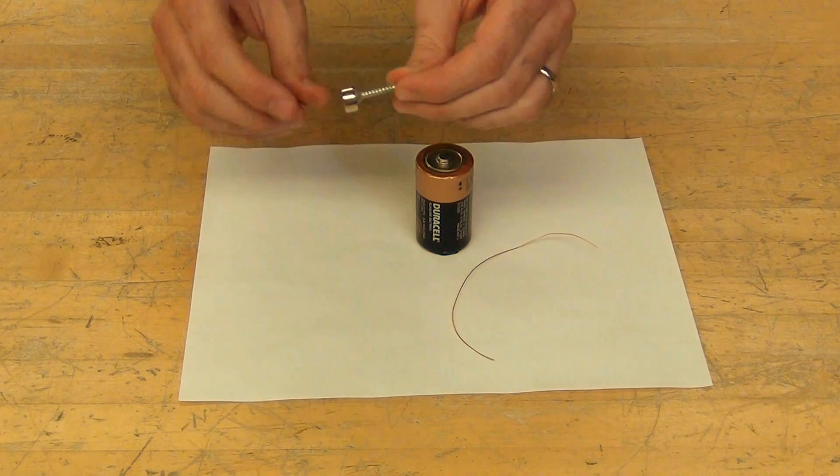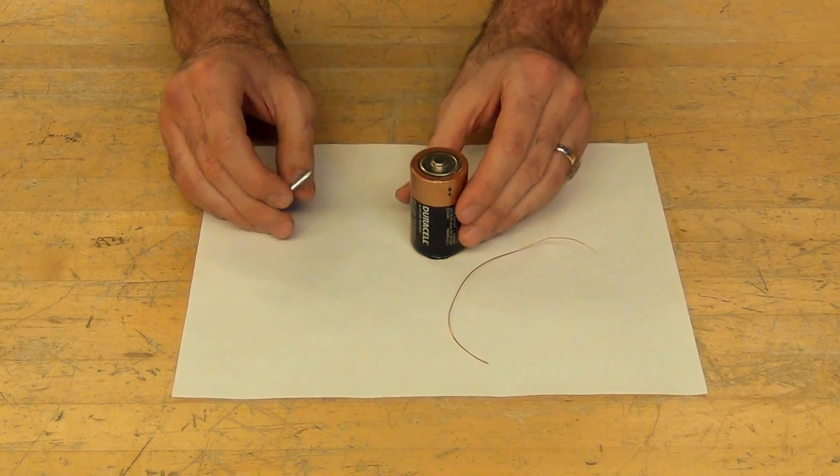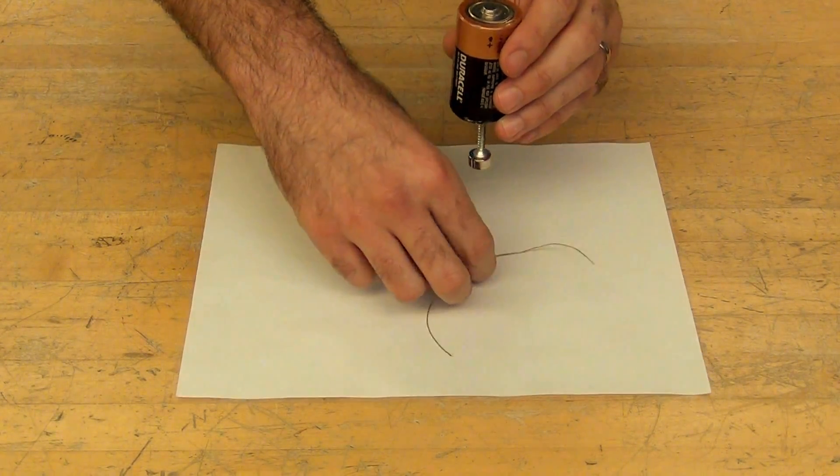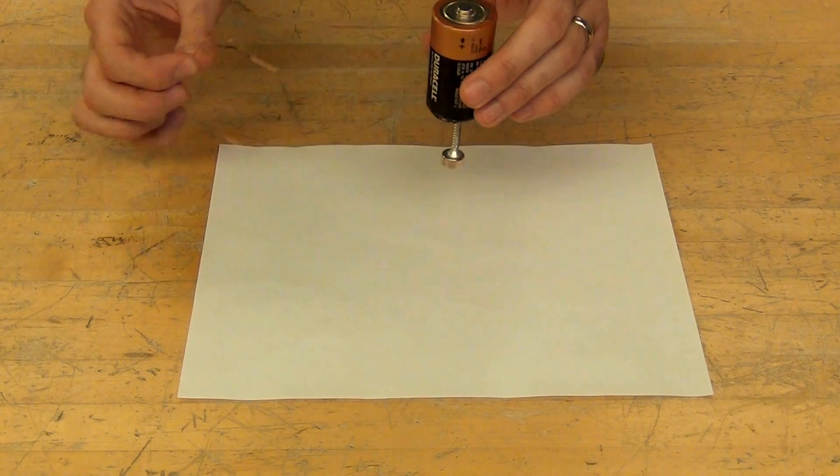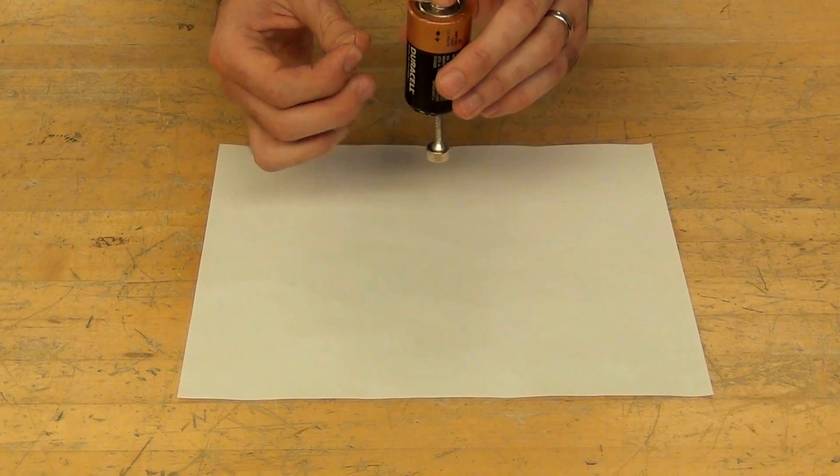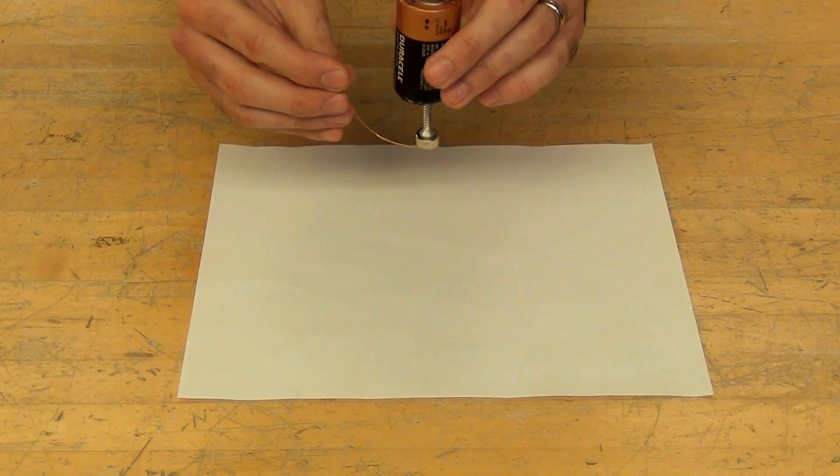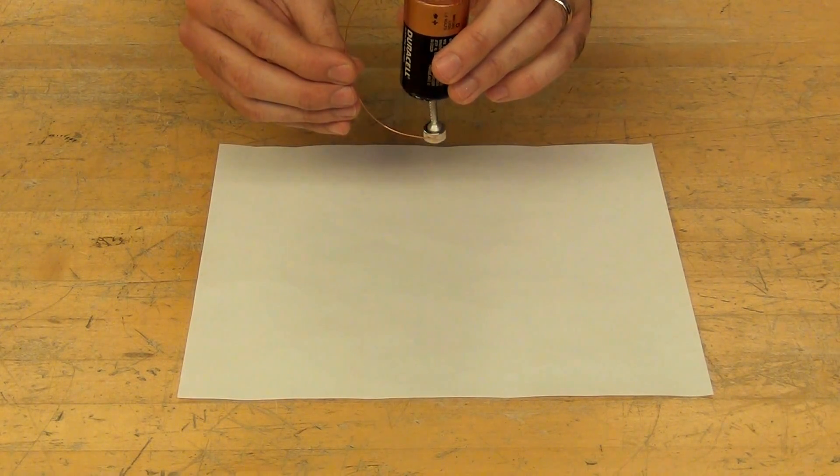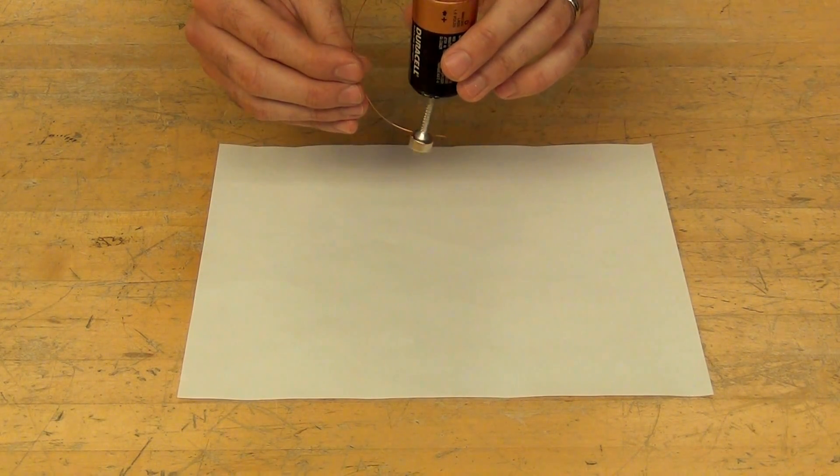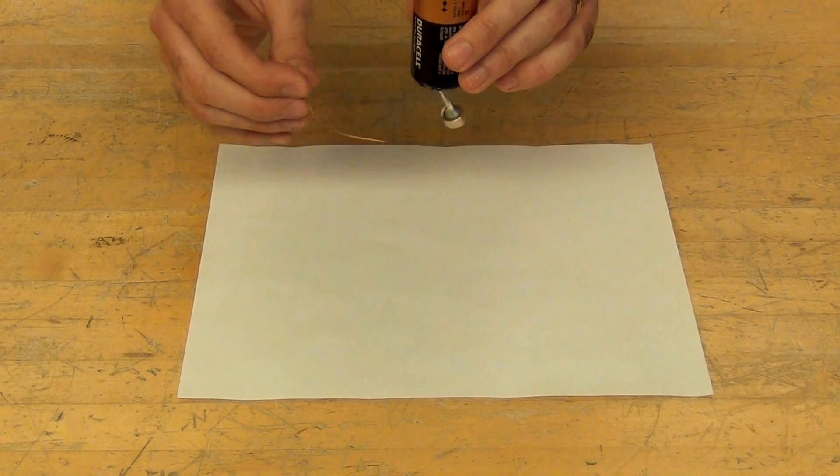We're going to attach the screw to the magnet, which magnetizes the screw enough that it can stick to the bottom of the battery, and then holding the wire at the top and loosely brushing against the side of the magnet, we create a motor with those pieces.